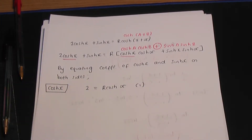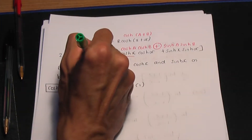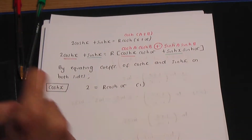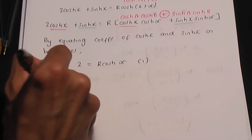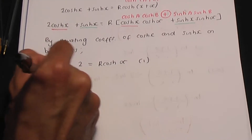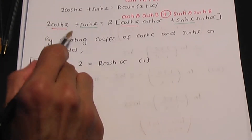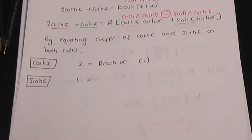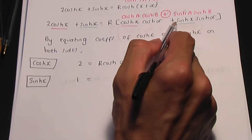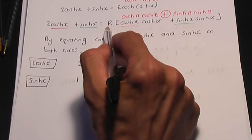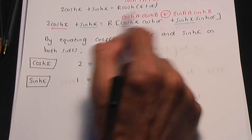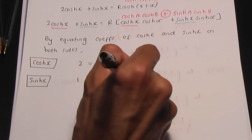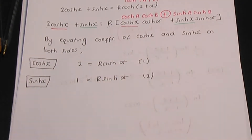Now equate the coefficients of hyperbolic sin on both sides. The coefficient of hyperbolic sin x on the left is 1, and that equals — don't forget the r — r hyperbolic sin alpha on the right. Call that equation 2.